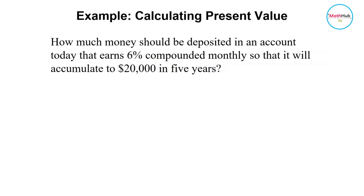Example: how much money should be deposited in an account today that earns 6% compounded monthly so that it will accumulate to $20,000 in five years?